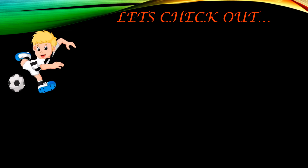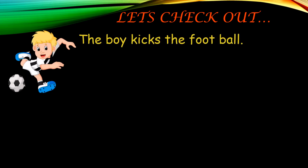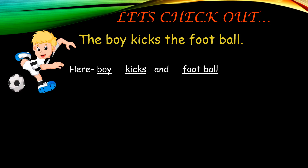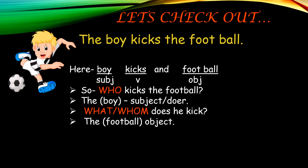So, let's check out what is a transitive verb. You see this picture? Here, the boy kicks the football. Let's concentrate on the words such as boy, kicks and football. Here, boy is the subject, kicks is the verb which is the action, and football is the object.